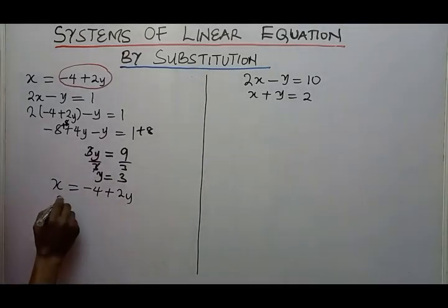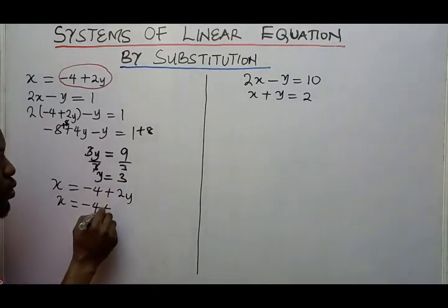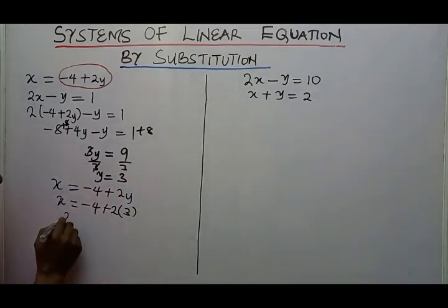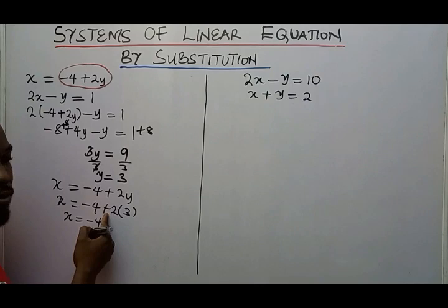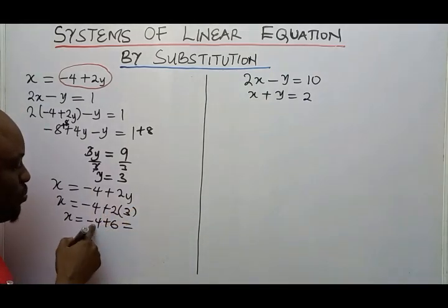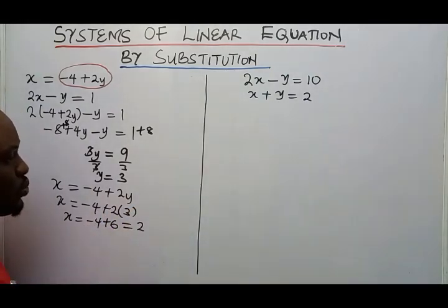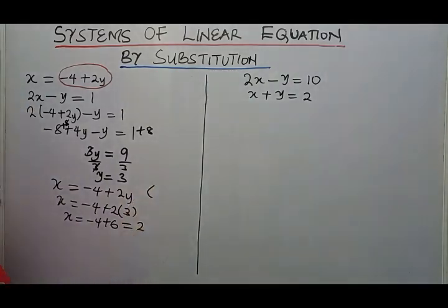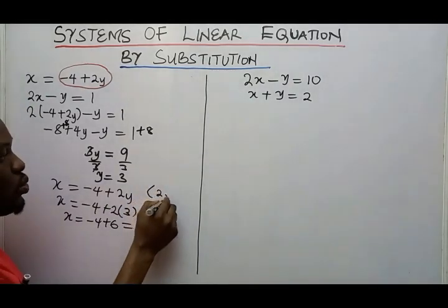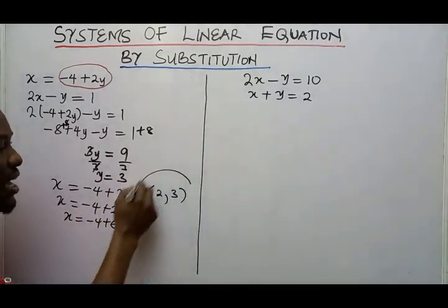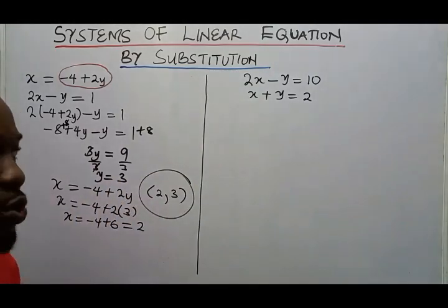So X equals minus 4 plus 2 times 3, which gives me minus 4 plus 6, which gives me 2. So finally, my X value is 2 when Y is 3, giving the solution (2, 3).